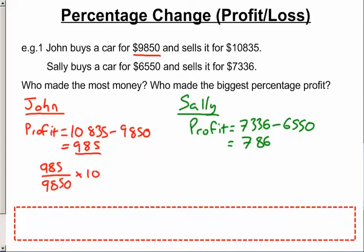And we times that by 100 to work it out as a percentage. So $985 as a percentage of the original amount spent. That means he made a 10% profit.